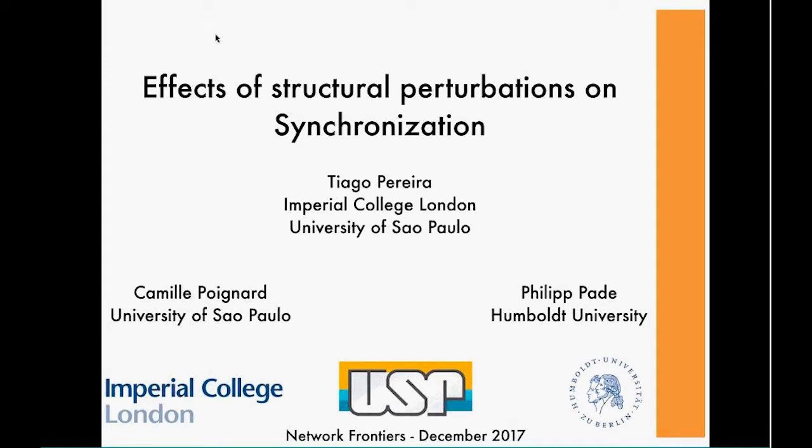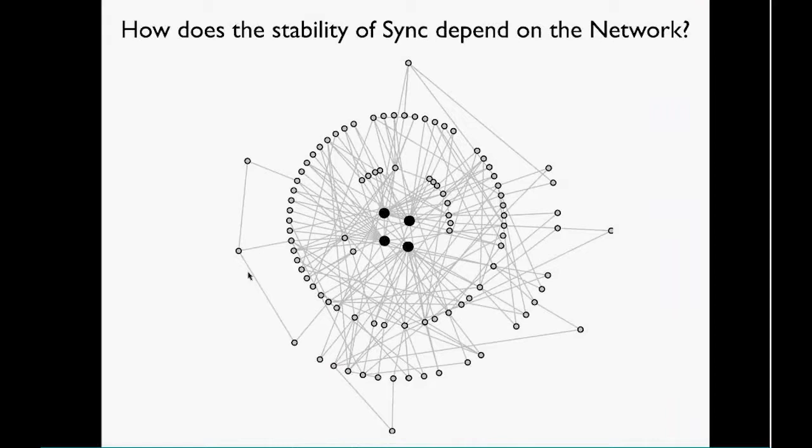It's a big pleasure to be sharing some of the work we've been doing the past few years. This is a joint collaboration with Camille Poniard from the University of São Paulo and Philip Panda. I think this resonates quite a bit with what Adilson and Rio and Takashi have been speaking about. The main goal of this work is to try to predict how the synchronization properties depend on the network structure.